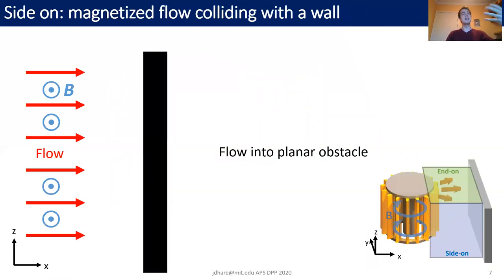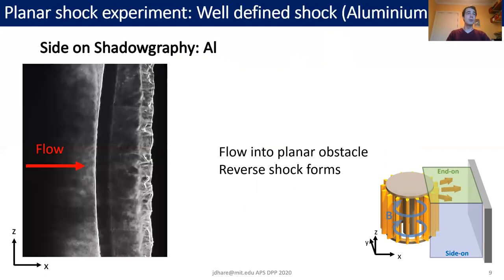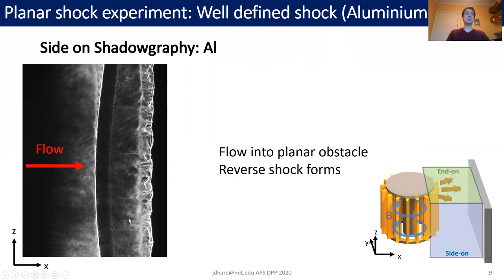Starting with side-on, this is a cartoon of what we expect to see. We have a magnetized plasma flow colliding with a conducting obstacle. We expect the magnetic field and the pressure to build up next to the target and launch a reverse shock which propagates back upstream into the flow. Indeed when we carry out this experiment using aluminum wires we see exactly that — the flow comes in, it collides with the target, and produces this very narrow, well-defined shock which propagates back upstream.